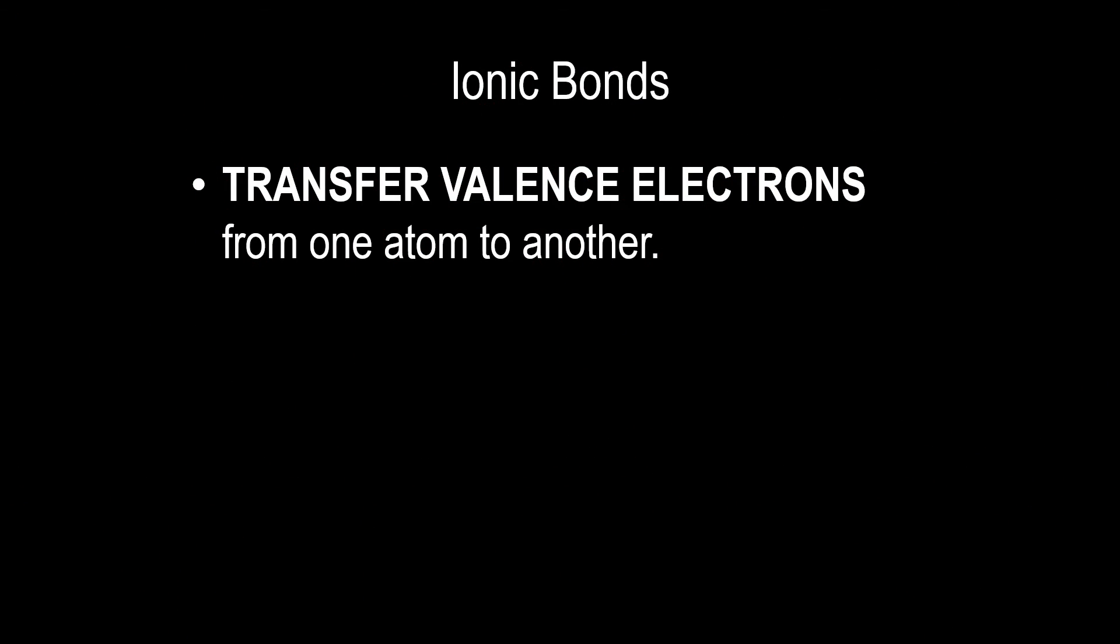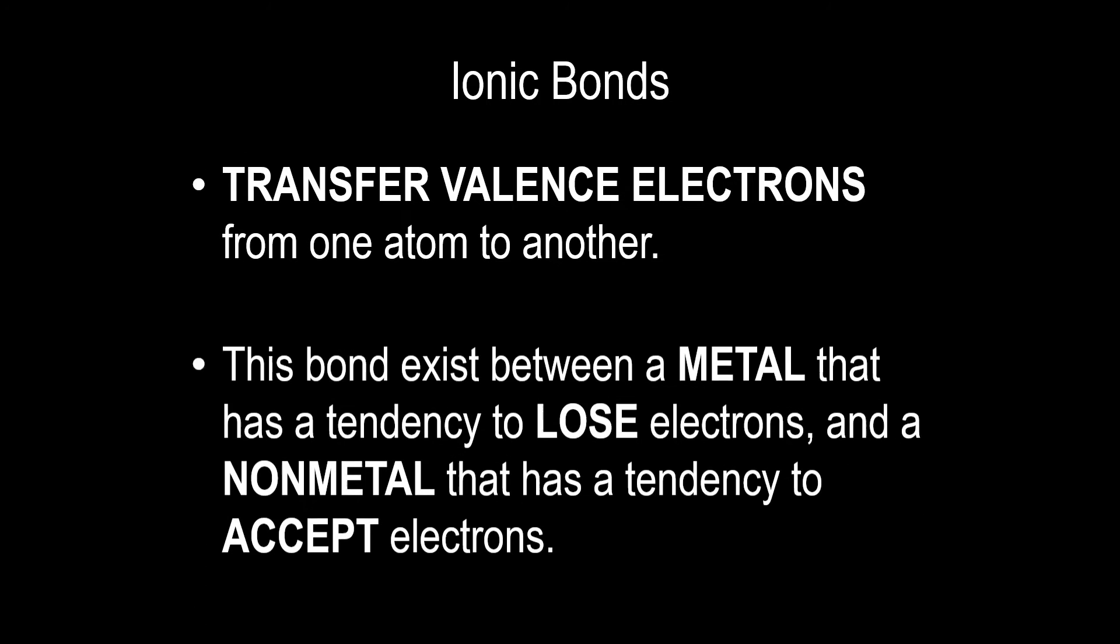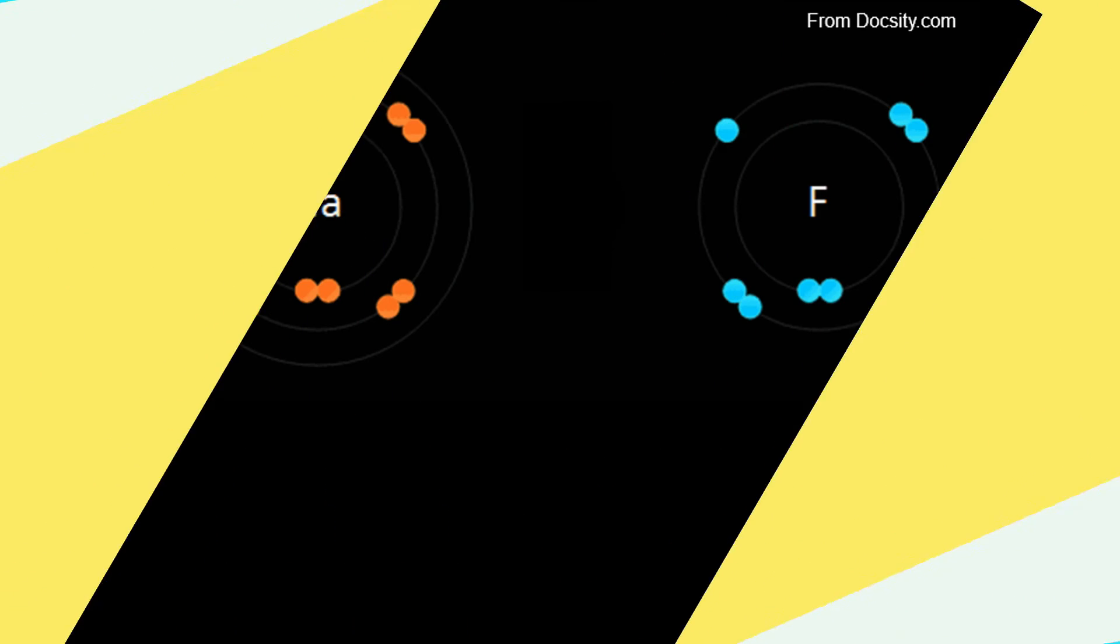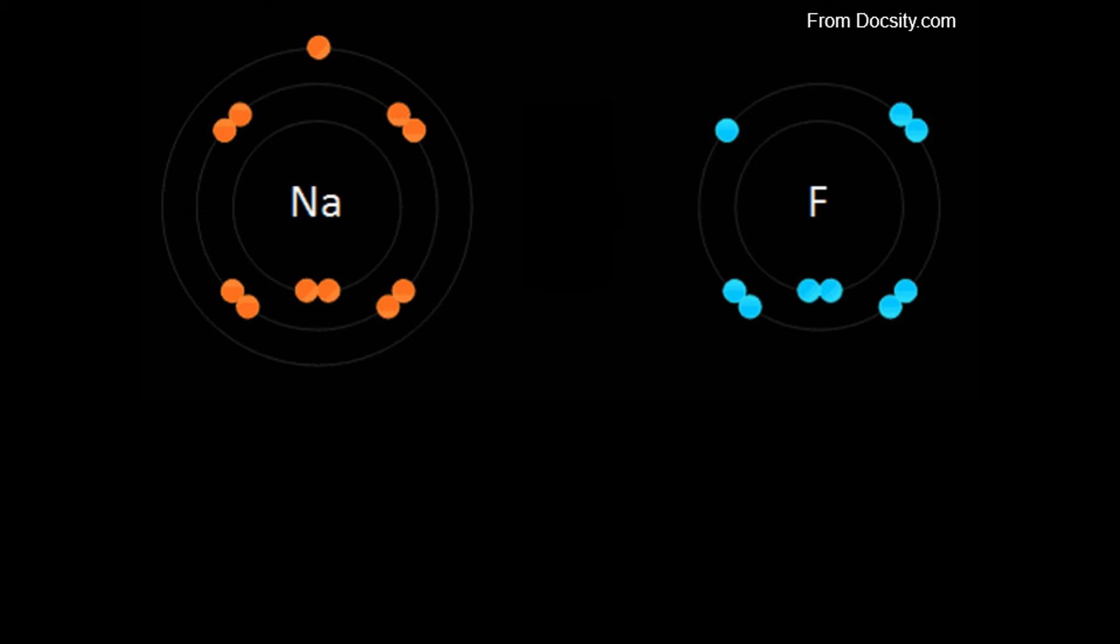The second type of bond for today is ionic bonds. This bond occurs when you transfer valence electrons from one atom to another. This bond exists between a metal that has a tendency to lose electrons, and a non-metal that has a tendency to accept electrons. Let's observe the ionic bonding of sodium, Na, and fluorine, F.